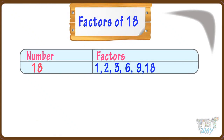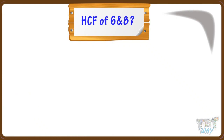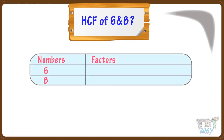Now let's learn what is HCF. HCF means Highest Common Factor. Let's learn to find HCF with an example — we have two numbers, 6 and 8. We have to find their HCF, that is, the highest common factor. For finding the highest common factor, we will first find all the factors of 6 and 8.